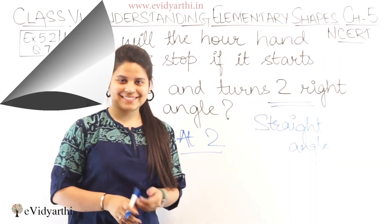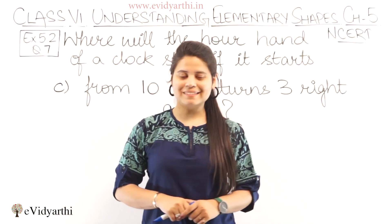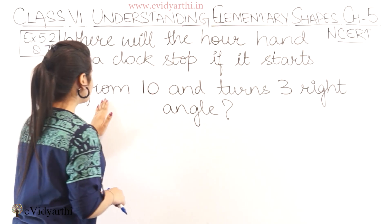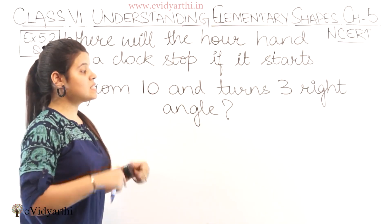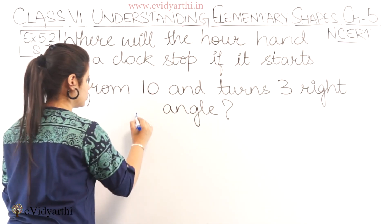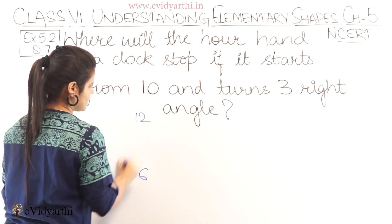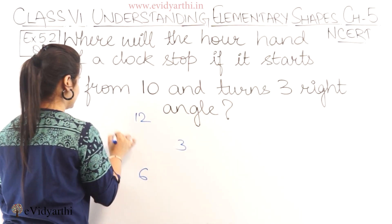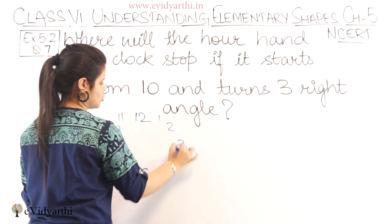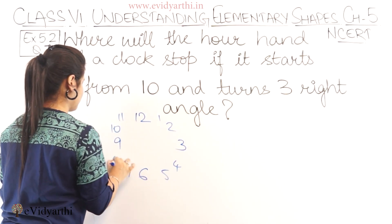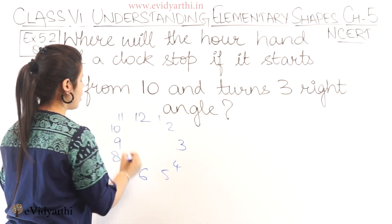So this was our B part. Let's come to the next part. Now coming to the third part. Third part has from 10 and turns 3 right angles. So let's draw a clock first. 12, 6, 3, 9, 10, 11, 1, 2, 4, 5, 7, 8. So now it is from 10.